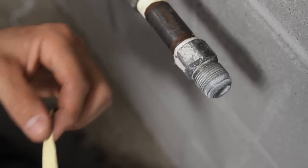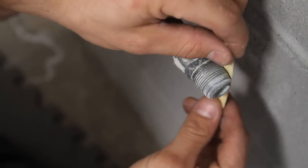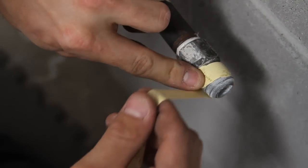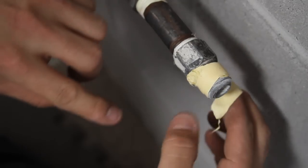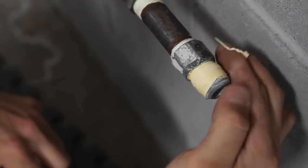Now when you put the tape on, you want to make sure that you wrap it around the fitting clockwise. If you go counter-clockwise, then when you tighten the gas line to the fitting, your tape is going to unravel.